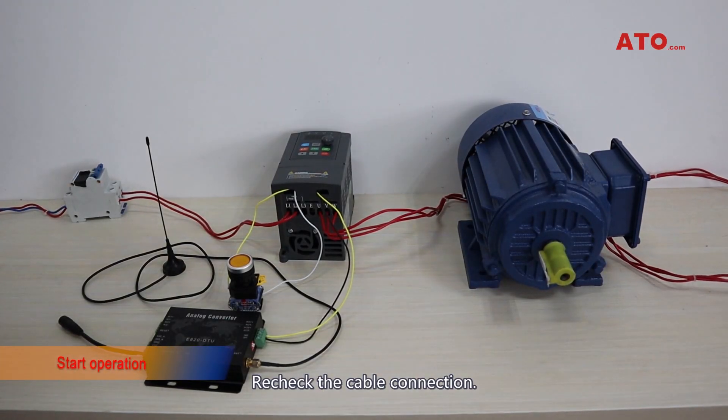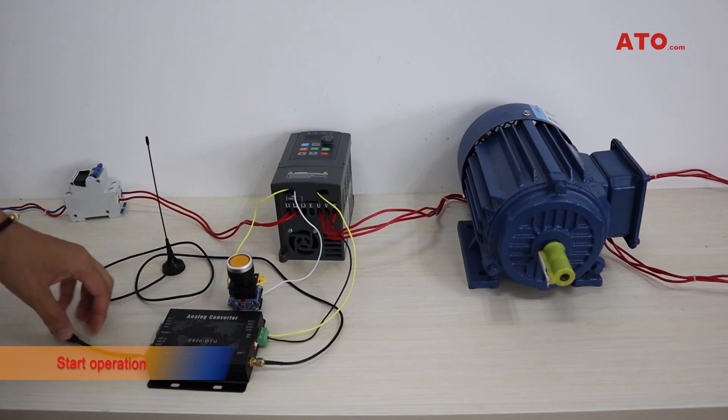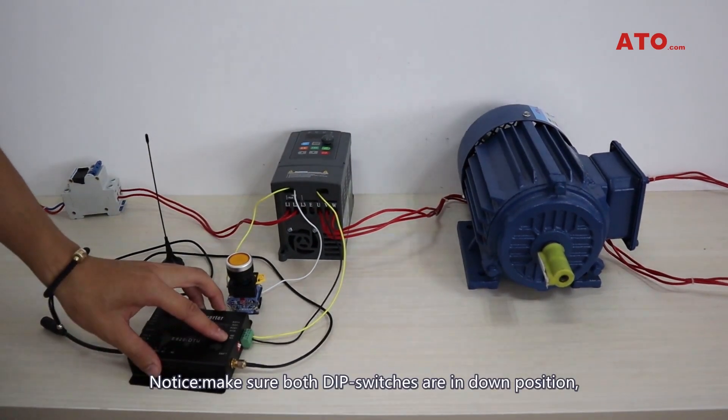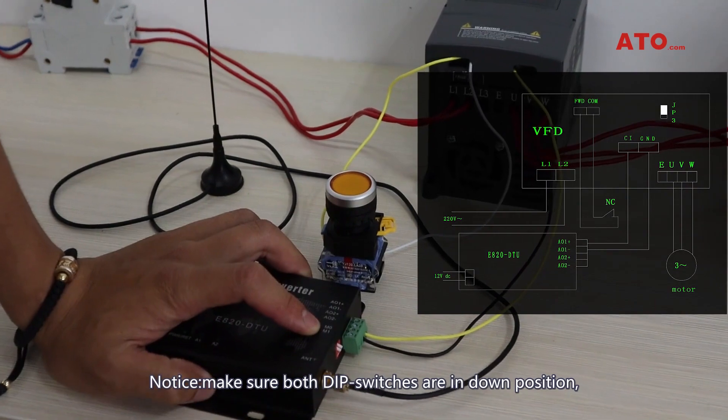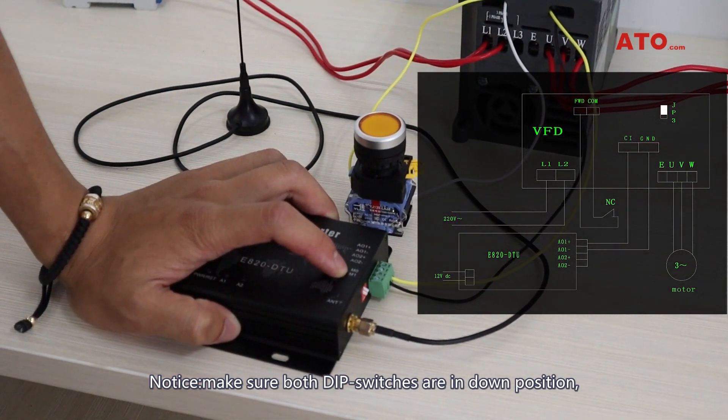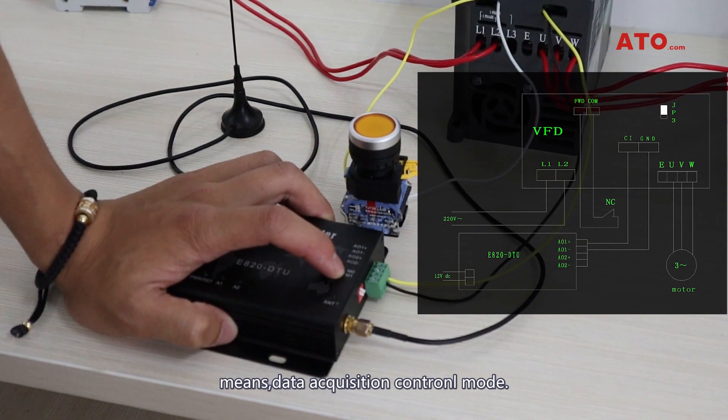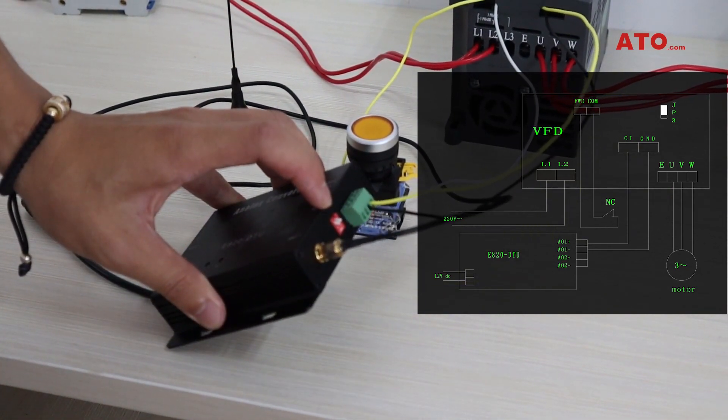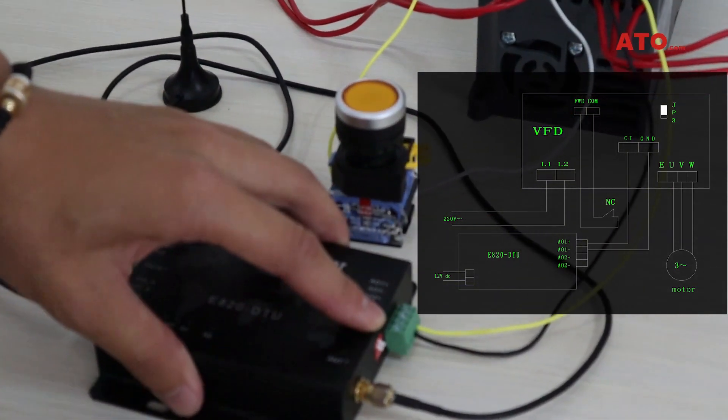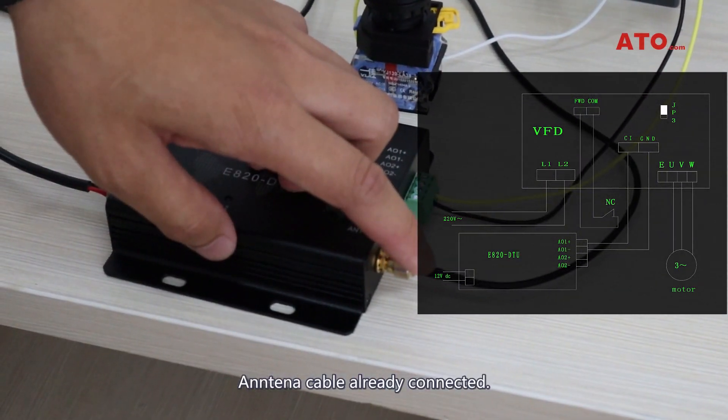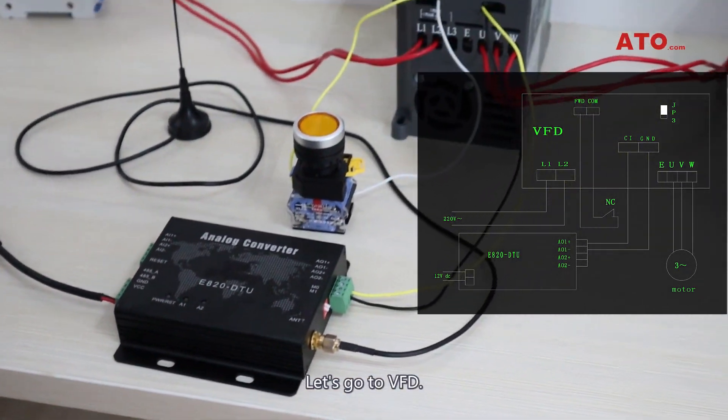Re-check the cable connection. Notice, make sure both DIP switches are in down position, means data acquisition mode. The antenna cable is connected. Let's go to VFD.